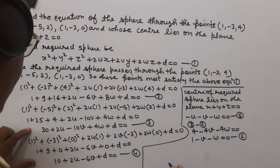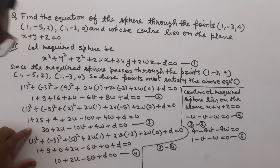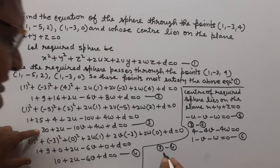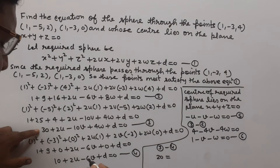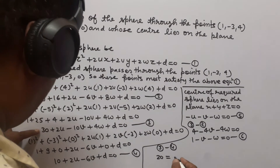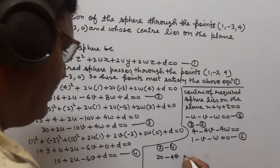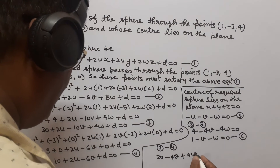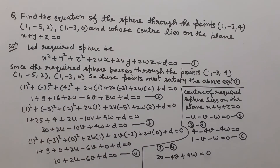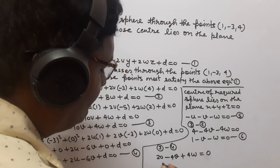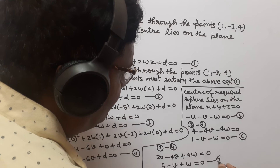Now we subtract equation 4 from equation 3. We get 30 - 10 = 20, 2u - 2u cancels, -10v + 6v = -4v, 4w - 0 = 4w, d - d cancels, giving 20 - 4v + 4w = 0. Dividing this whole equation by 4, we get 5 - v + w = 0. Suppose this is equation 7.